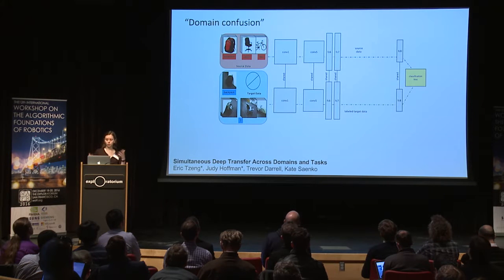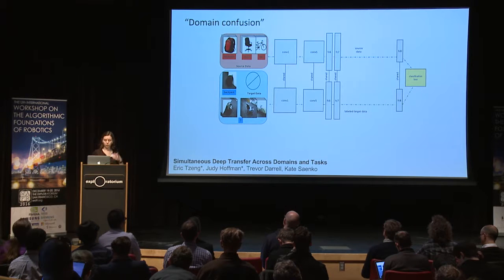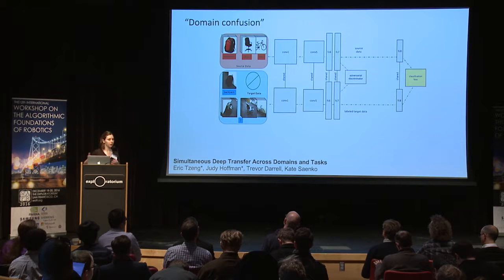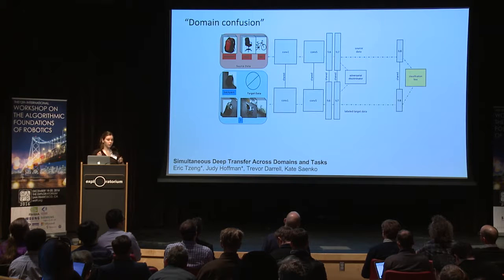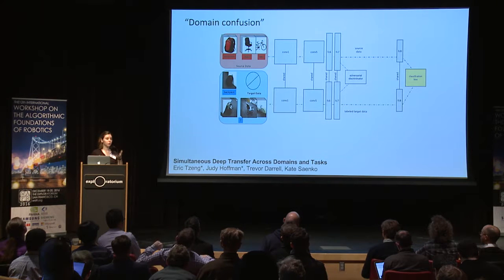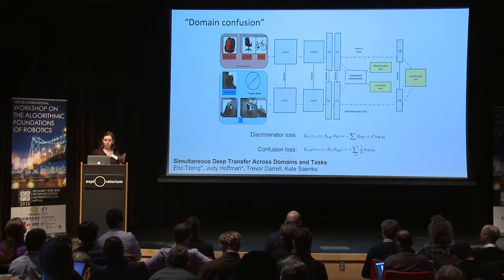In domain confusion, you're trying to accomplish some visual task and learn a representation that works for your source domain, where you have lots of data and labels, and your target domain, where you may have few labels and little data. To do this, you add an adversarial discriminator on top of your network's final features, then alternate between training the discriminator to correctly classify which domain a representation came from, and training the model to produce a representation that can't be discriminated. The discriminator maximizes its own accuracy while the model maximizes the entropy of the discriminator to keep it maximally confused.